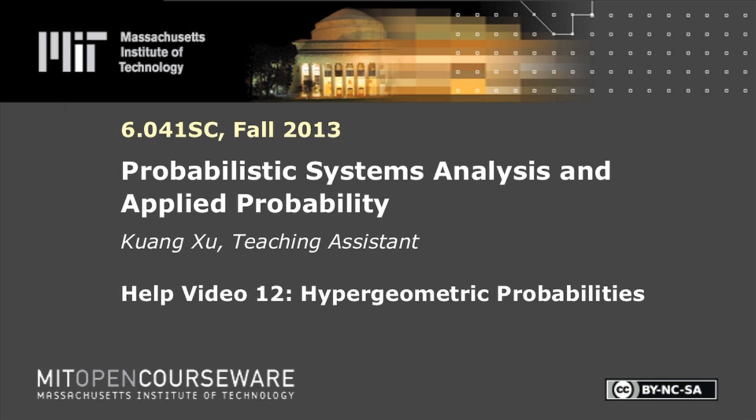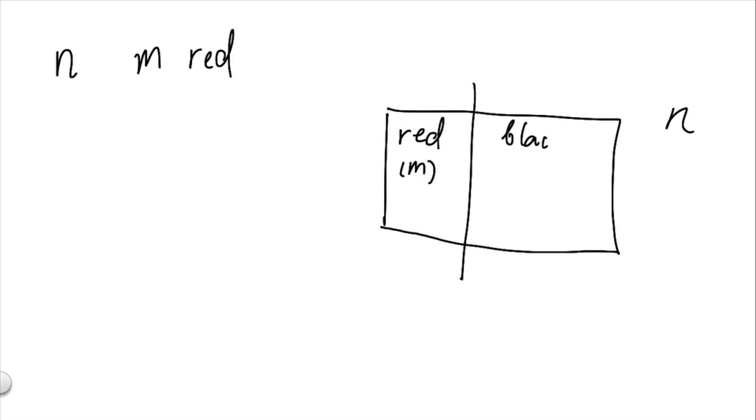In this problem, we're given an urn with n balls in it, out of which m balls are red balls. To visualize it, we can draw a box that represents the set of all n balls, somewhere in the middle or somewhere else that we have a cut, such that to the left, we have all the red balls that are m, and non-red balls, let's for now call it black balls, that is n minus m.